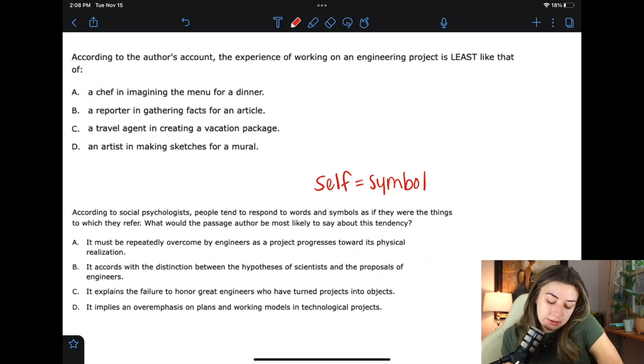C, it explains the failure to honor great engineers who have turned projects into objects. So I think that's just trying to throw some key words in there that we remember from the passage and trying to see if we bite. The failure to honor great engineers, what does that have to do with this thing that social psychologists say? I don't understand what they're trying to say here. D, it implies an overemphasis on plans and working models in technological projects. So I don't think that this is something that the author would say. I don't think that the author would ever say that we plan too much. Because if you remember, in one of those last paragraphs, it was talking about the planning process and it never said anything bad about the planning process. So I don't think that that would be something the author would agree with. So I think it's A.